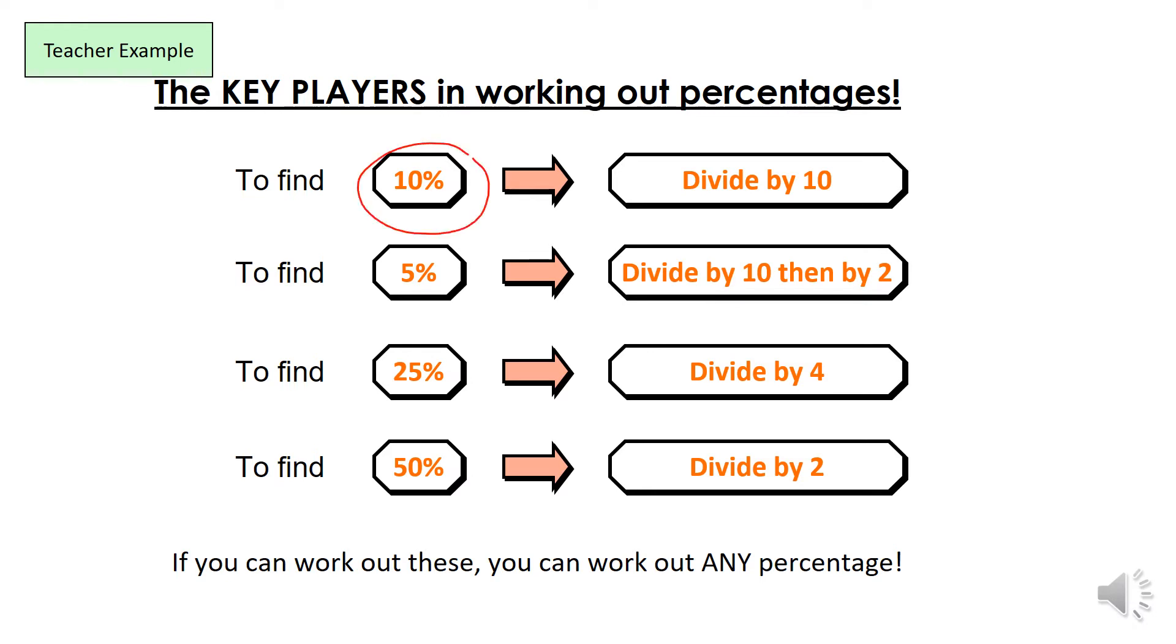To find 10%, we divide our value by 10. To find 5%, we need to half the 10%, so I'm going to divide it by 2. To find 25%, I must divide our amount by 4. And to find 50%, we divide our amount by 2.